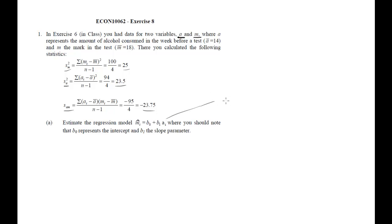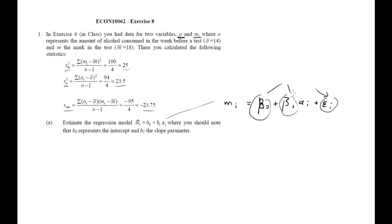You also know that sometimes we express the regression model with an error term. Rather than using the predicted value of m, we have the observed value of m, and we have beta naught plus beta 1 times a_i plus an error term. These parameters and error terms are all unobserved. We use a sample to get sample estimates — we call the sample estimate of beta naught b naught, and the sample estimate of beta 1 we call b1.